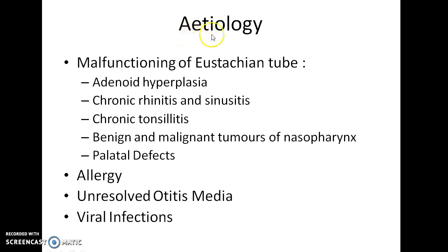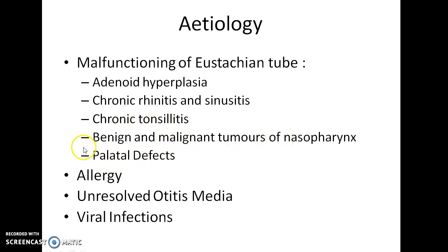The etiology of serous otitis media includes malfunctioning of the eustachian tube as seen in conditions like adenoid hyperplasia, chronic rhinitis and sinusitis, chronic tonsillitis, benign and malignant tumours of the nasopharynx, and palatal defects. In these conditions, the eustachian tube fails to drain the fluid from the middle ear.